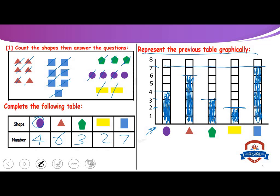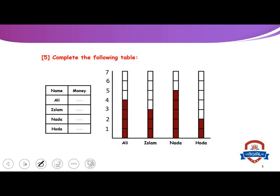It's very, very easy. Let's continue. Complete the following table — we have the bar graph and we wanted to complete the table. Ali: how much money does Ali have? Let's see — that number is four, so we write four. Islam: three. It's very easy. Nada: five. Hoda: let's see — that number is two.